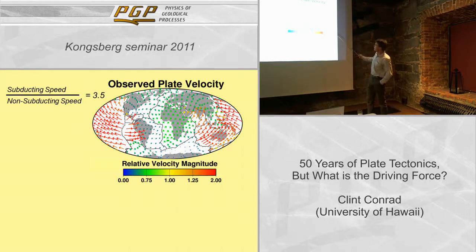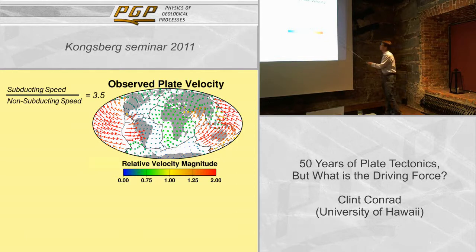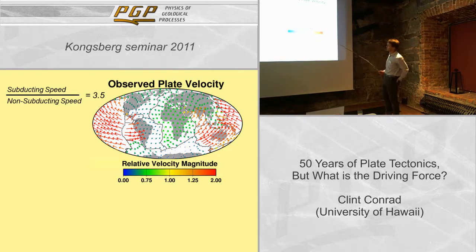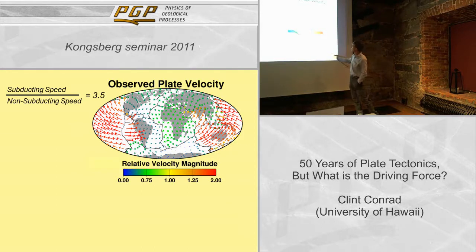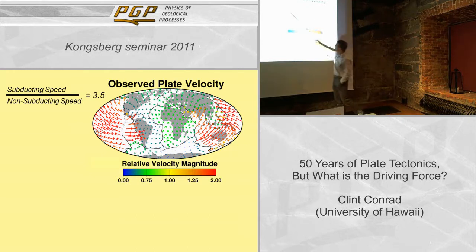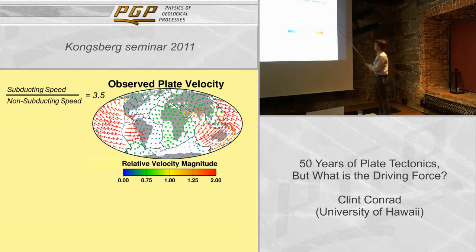What they looked at was the pattern of plate motions at the surface. What combination of the different forces produced the observed geometry and plate motions? Here I'm showing plate motions in terms relative to the average plate speed. The reds are going two times faster than average; the blues and greens are going about half as fast as average.